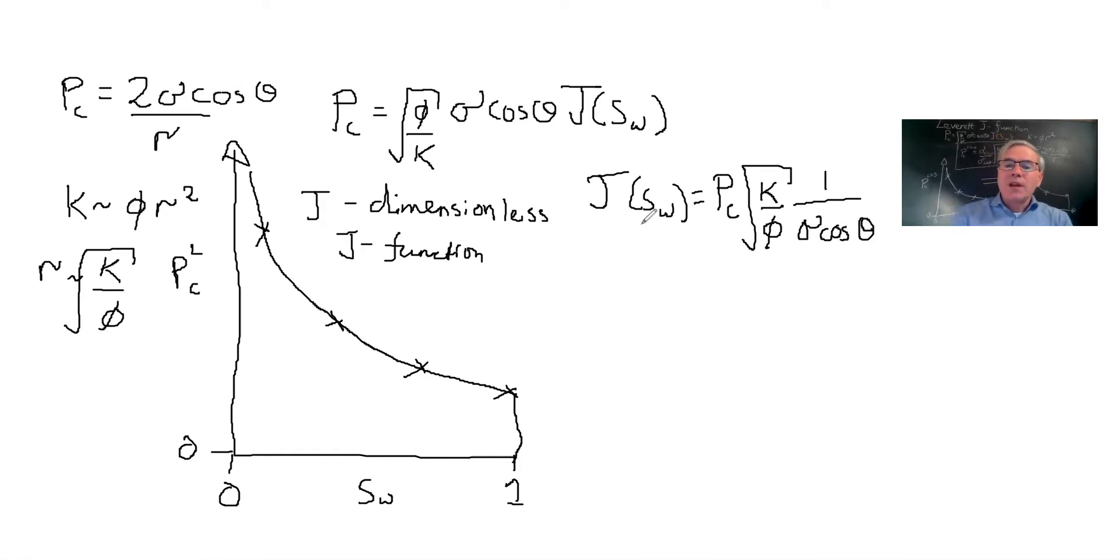So what we can do is I can find J from PC. So J of S_W is equal to PC times √(k/φ) and then divided by σcosθ. So instead of PC, I could plot instead J. It would just be a rescaling of this data.